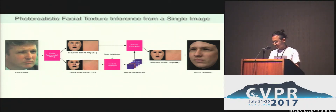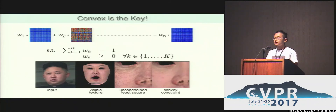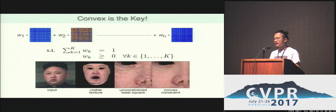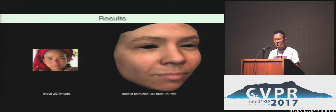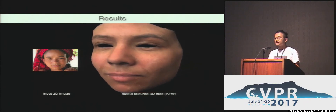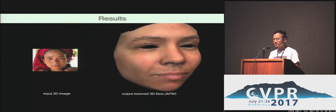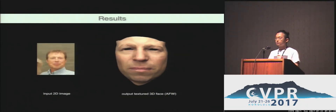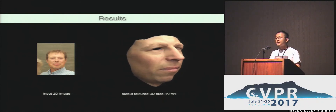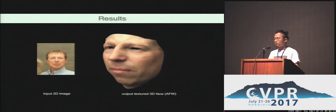Here, I show you the result. If we solve it using unconstrained least-squares, it may produce unpleasant output. So, we also introduced a convex constraint. Convex constraint stabilizes texture reconstruction substantially. As you can see, we can reconstruct photorealistic facial texture from low-resolution images, here shown on the left side. It's also important to note that we can recover details from missing regions due to occlusion.